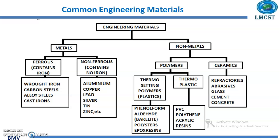Common engineering materials are normally classified as metals and non-metals. The metals are again classified as ferrous metals and non-ferrous metals. The ferrous metals consist of iron, and the non-ferrous metals do not contain iron.